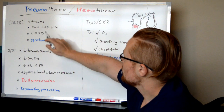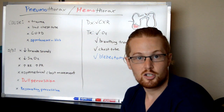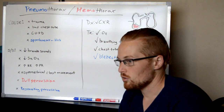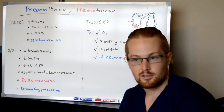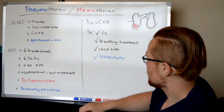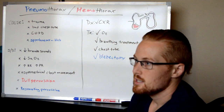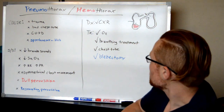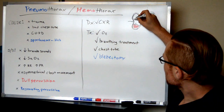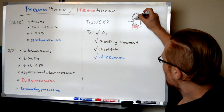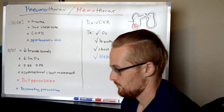In pneumothorax, sometimes it's spontaneous. It's actually seen a lot with young men in their 20s. There's something called a bleb — they'll develop these little openings, almost like COPD, little openings in the lung that allow air to escape.